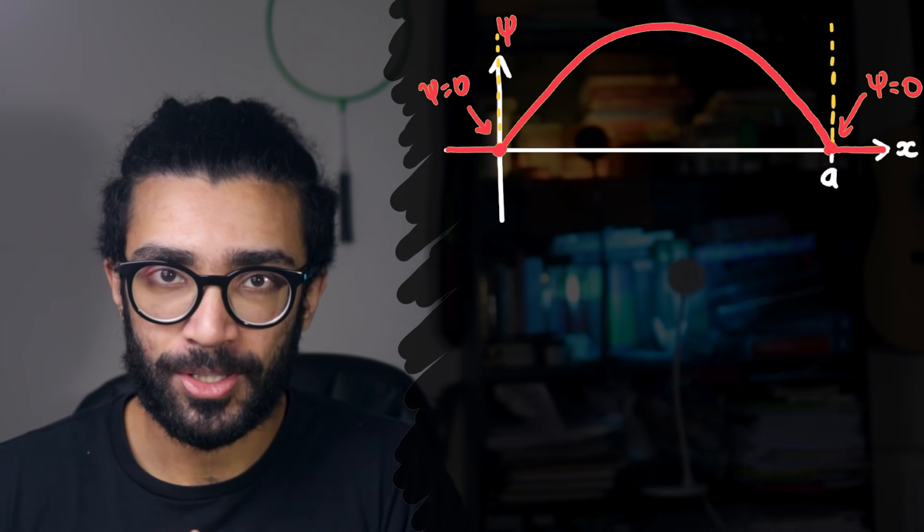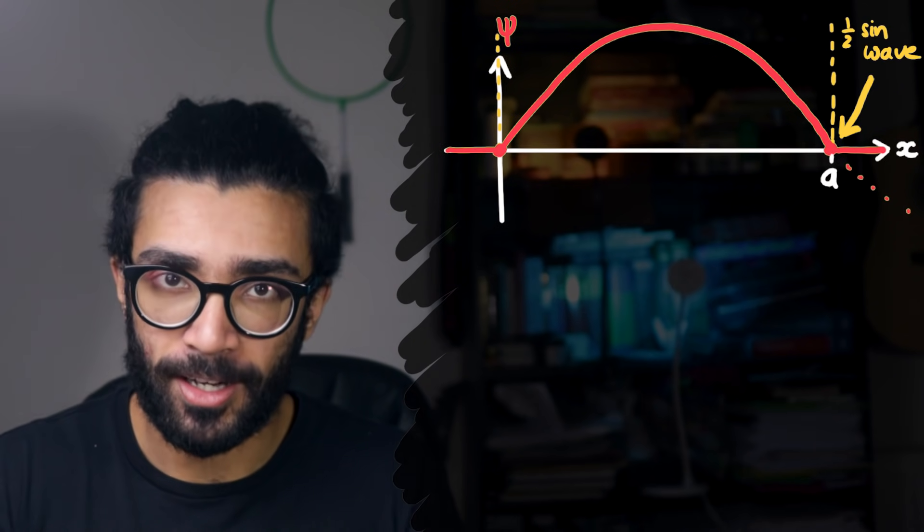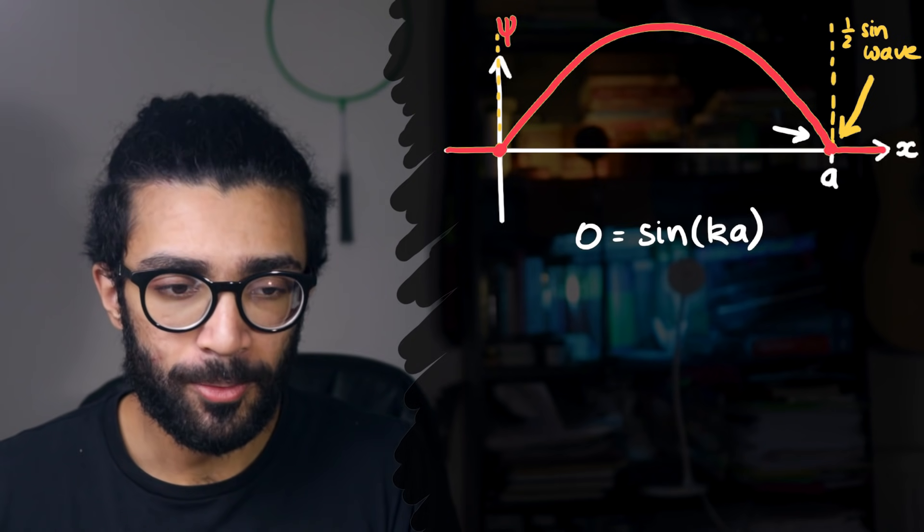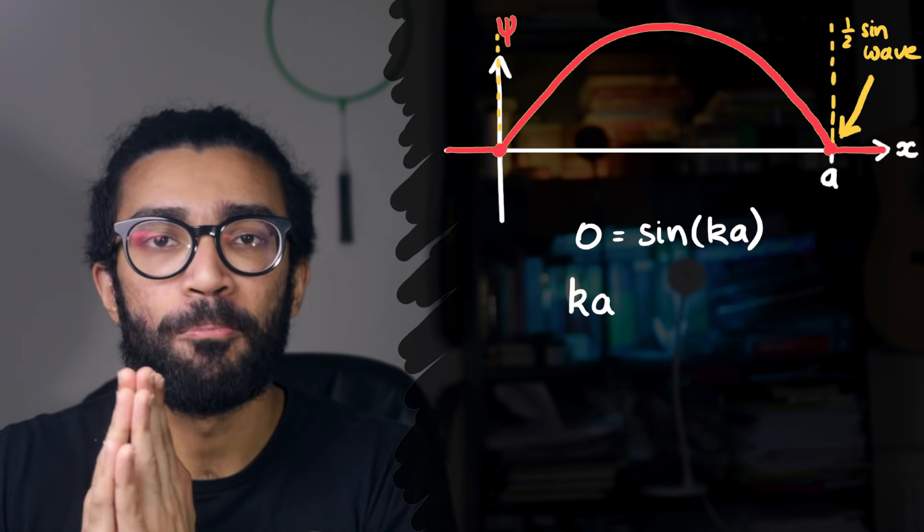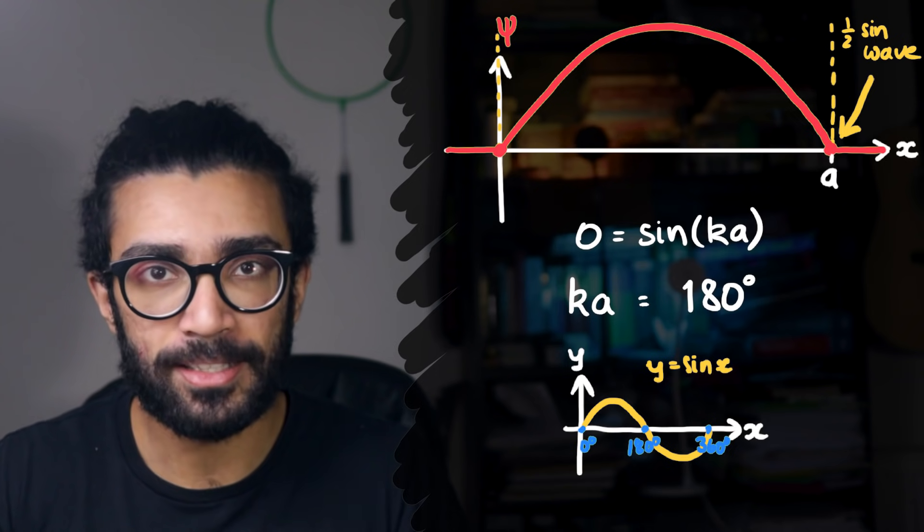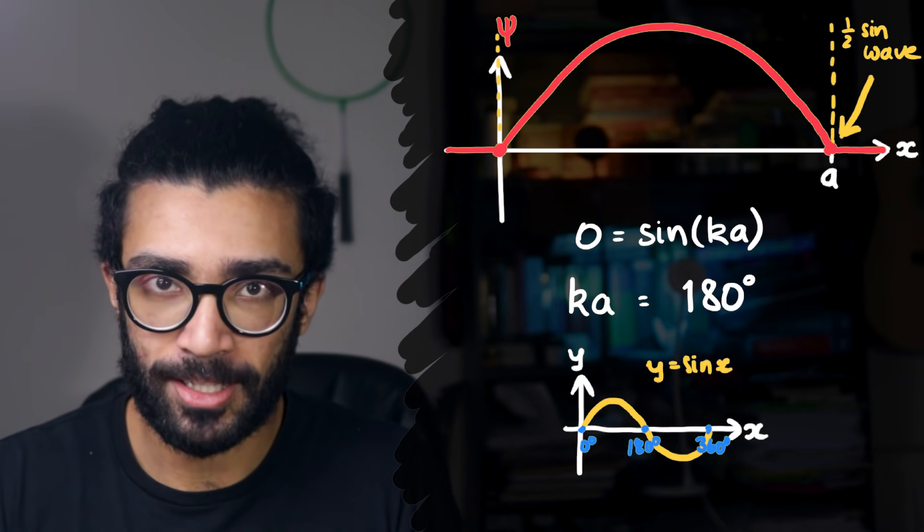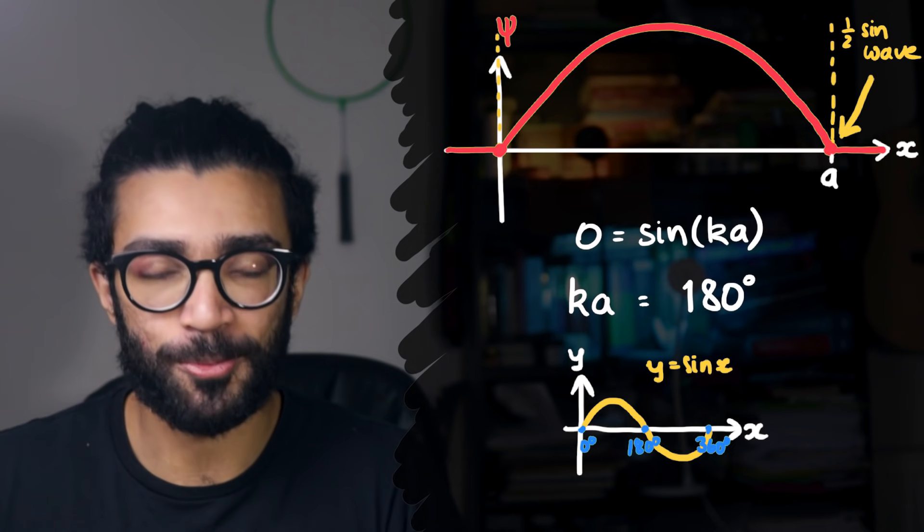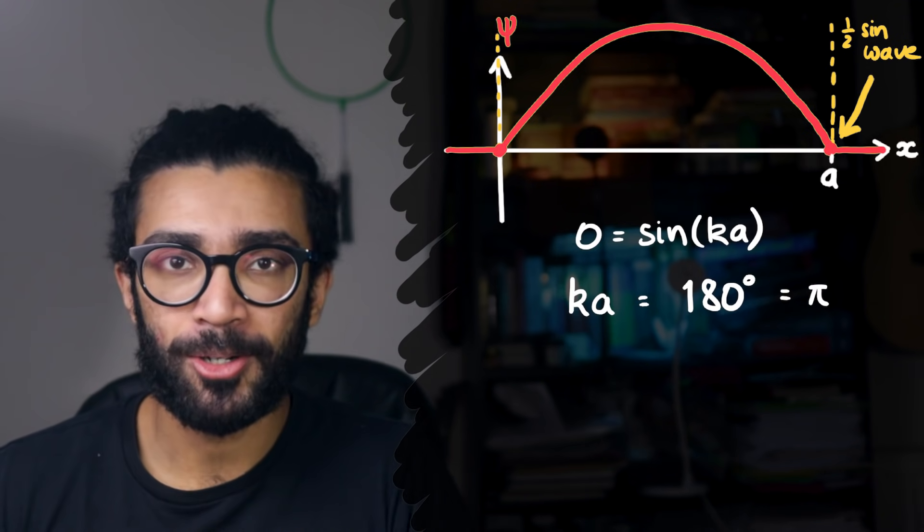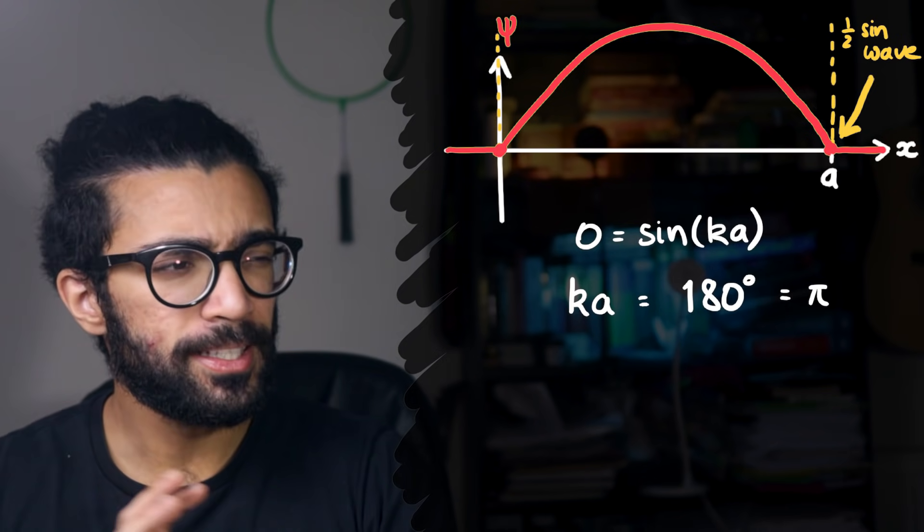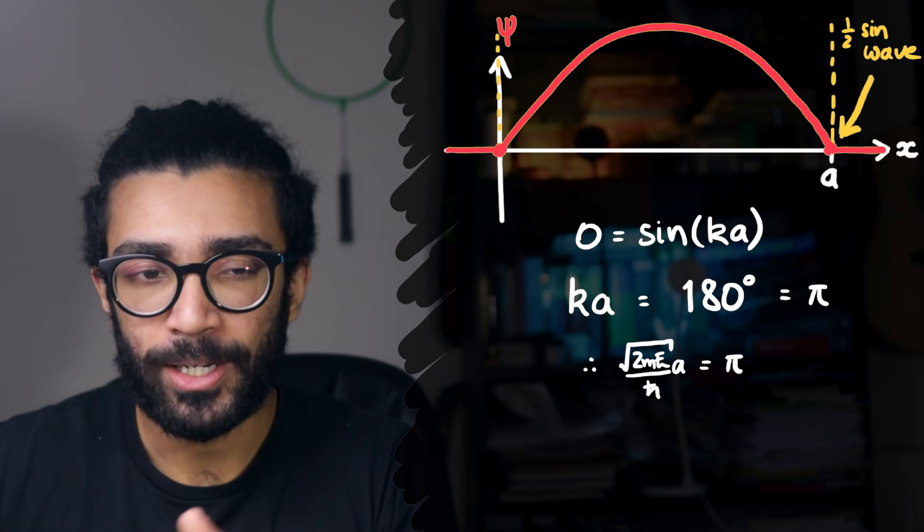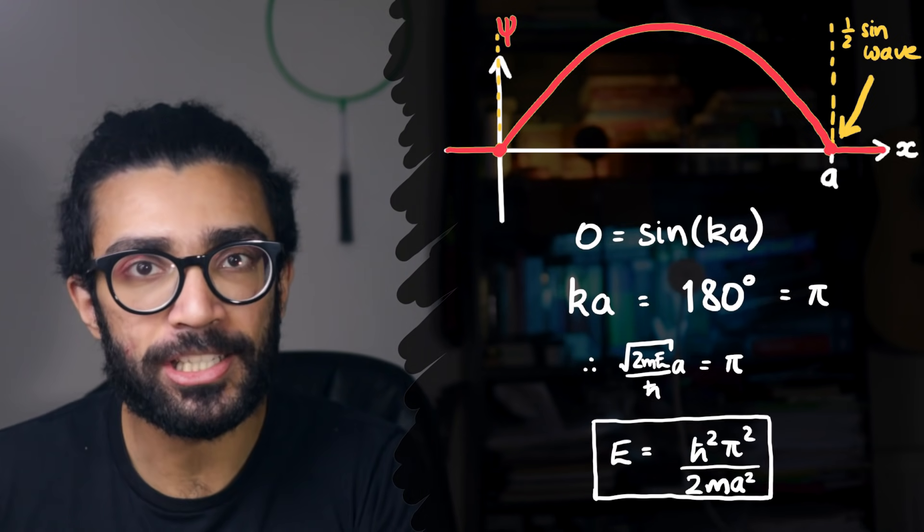We essentially find a restriction on the kind of sine wave that we can have as a solution. For example, this is one possible solution. It's half a sine wave, but the value of psi at each wall is zero, as we need it to be. And looking very carefully, at this position, we've gone through half a sine wave, which means that this quantity within our brackets must be equal to 180 degrees, because that's when we go through half a sine wave, right? Sine of 180 degrees is equal to zero. And if we use radians instead of degrees, which is the other unit of measuring angles, the much more natural unit of measuring angles, then 180 degrees is actually equal to pi radians. Resources in the description below about radians if you're unfamiliar with them. But so we find that this equation must hold true if our wave function is half a sine wave. And when we rearrange it, we now have something that tells us the value of the energy E.